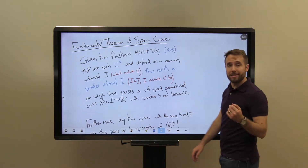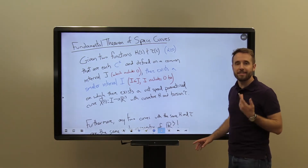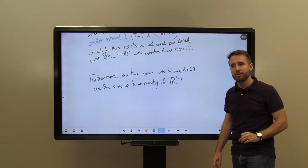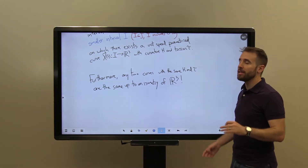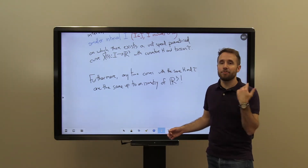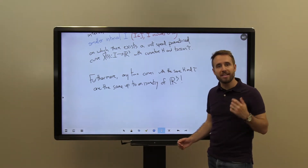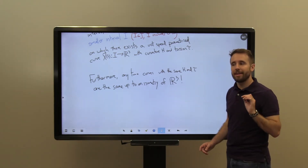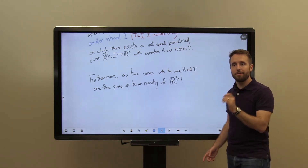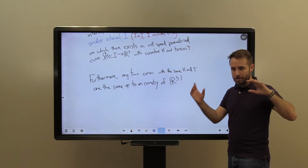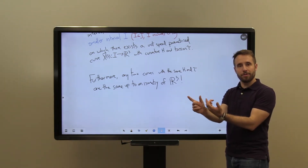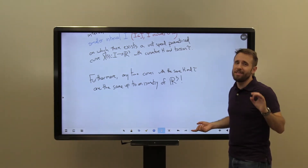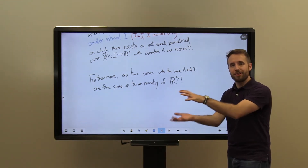However, we do get this nice concluding remark that mirrors what we had in R2. Furthermore, any two curves that have the same curvature and same torsion functions are in fact the same up to an isometry of R3. So curvature and torsion are our two defining functions — any other curve with the same curvature and torsion will really be the same curve, maybe just moved around in three-dimensional space.